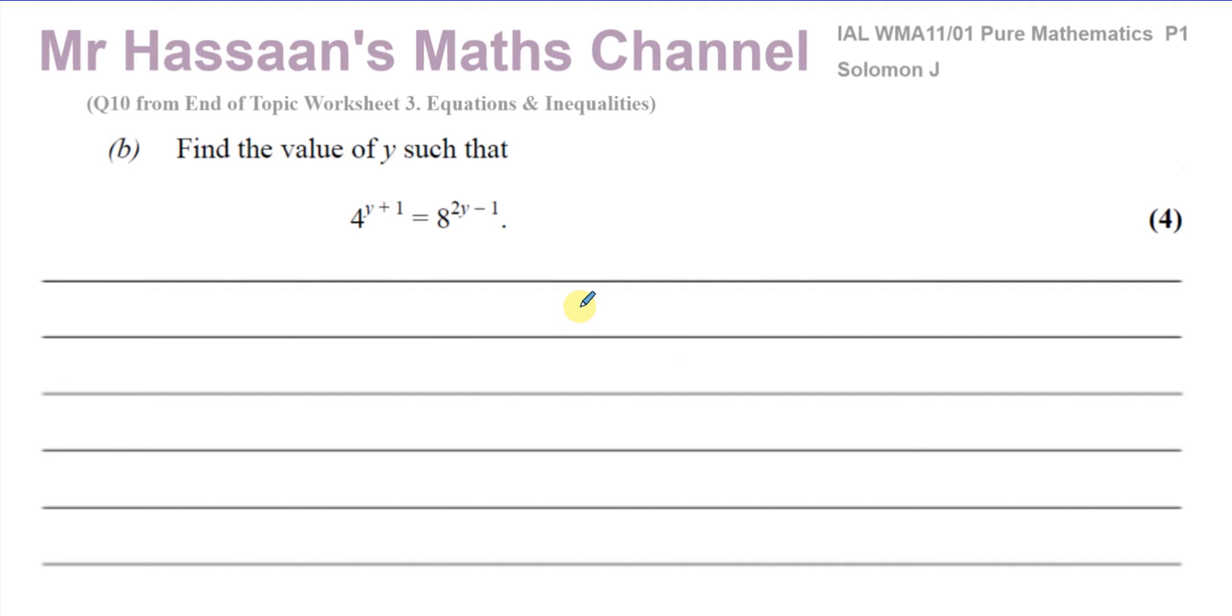We're going to solve it here. This question is in P1 where we have these exponential equations where you have the power with the variable in it that you have to find. It's called an exponential equation. In P1 we can solve these very easily because we're always given the type of equations or the type of base numbers which can be expressed with the same base.